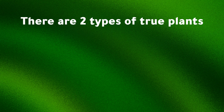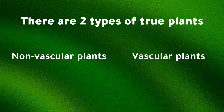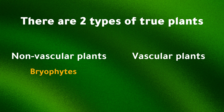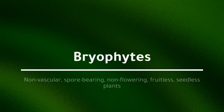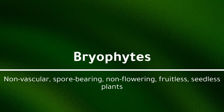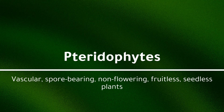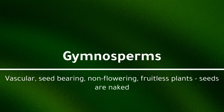In summary, there are two types of true plants: non-vascular plants and vascular plants. Non-vascular plants include only one group — the bryophytes. Vascular plants include the pteridophytes, gymnosperms, and angiosperms. Bryophytes are non-vascular, spore-bearing, non-flowering, fruitless, and seedless plants. Pteridophytes are vascular, spore-bearing, non-flowering, fruitless, and seedless plants. Gymnosperms are vascular, seed-bearing, non-flowering, and fruitless plants, and their seeds are naked.